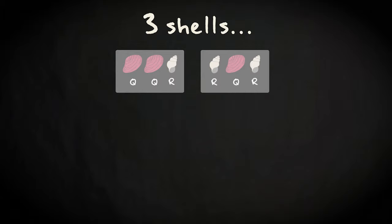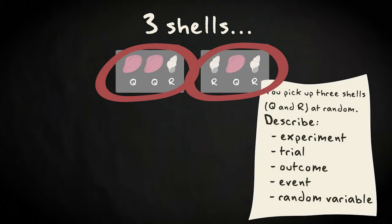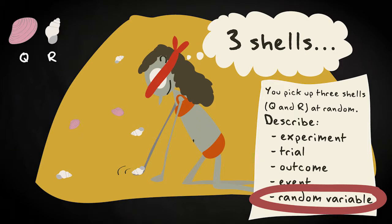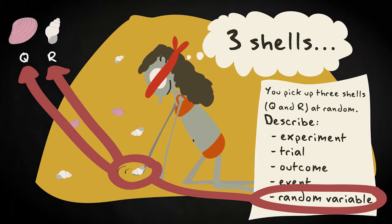You can define any outcome or combination of outcomes as an event — for example, all cases where you have picked up at least one Q shell. The random variable in this experiment, and also in each trial of this experiment, is the type of shell you will pick up.